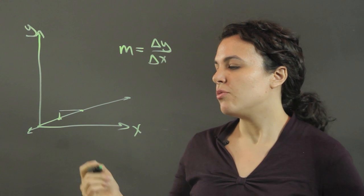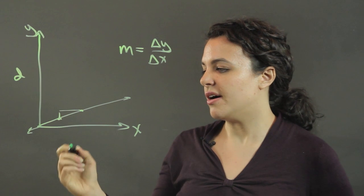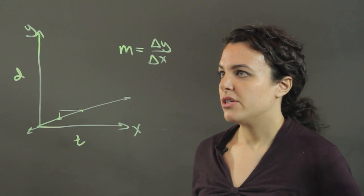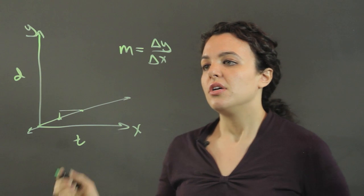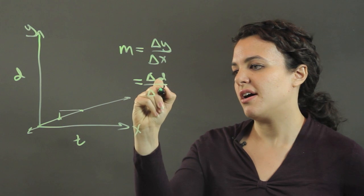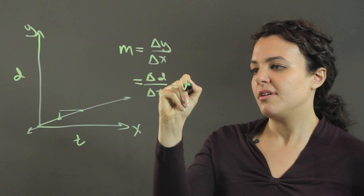Oftentimes we could graph something like distance in y and time on the x-axis. So our change in y over our change in x is really our change in distance over our change in time. And this rate is equivalent to velocity.